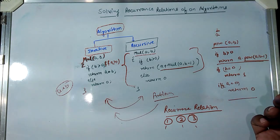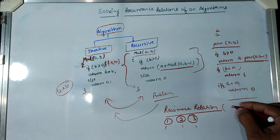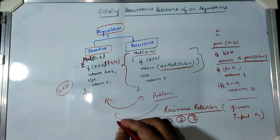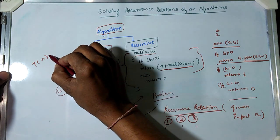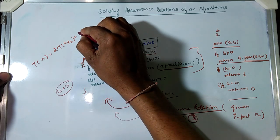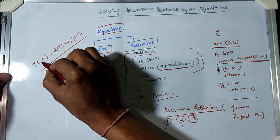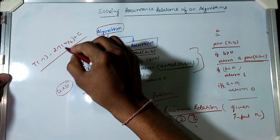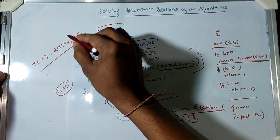A recurrence relation is a relation of the time complexity T(n) on n inputs expressed in terms of smaller inputs. For example, T(n) = 2T(n/2) + c, where c is a constant. This says the problem of size n can be solved by dividing it into two subproblems of size n/2 plus some constant amount of time. This can be solved using the substitution method, recursion tree method, or master's method.